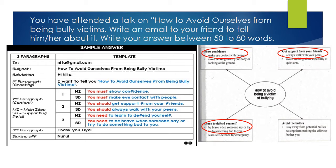You can see here point number one, point number two, and point number three. The main idea is the one in bold. So for point one: you must show confidence — the supporting detail is you must make eye contact with people. Just take the first point. Same goes for point two: get support from your friends. You should always walk with your peers. Just make it into a sentence.